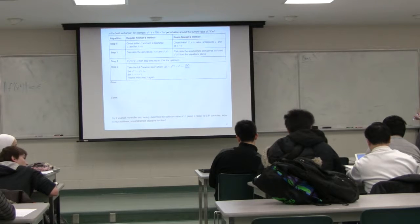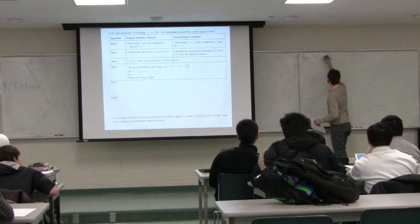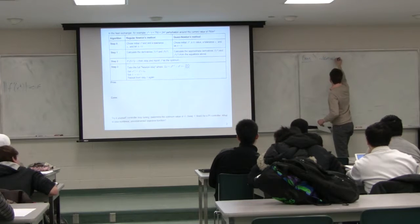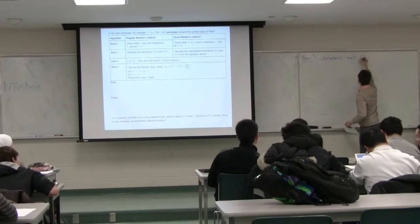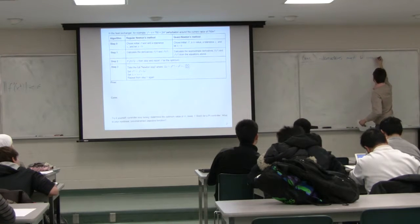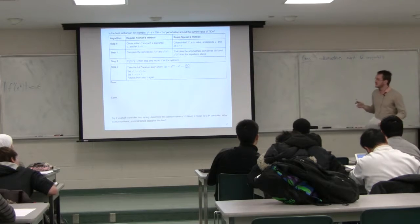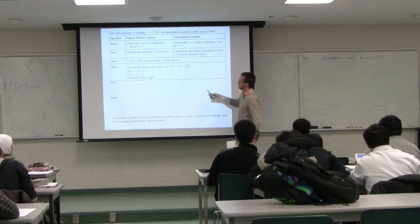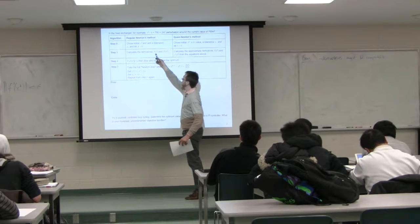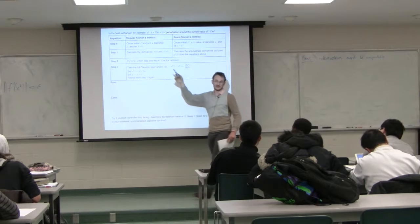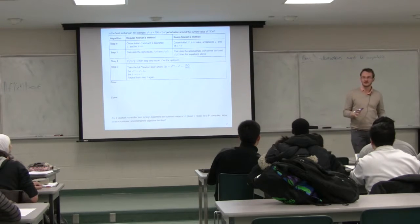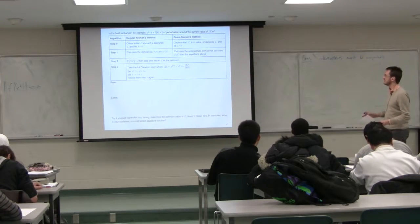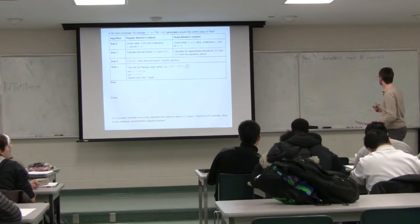Shortcomings: derivatives must be computable — whether analytically as in regular Newton's method, where you can evaluate f prime and f double prime analytically, or as in quasi-Newton's method where you must at least be able to approximate them. If you can't do either, this method won't work.